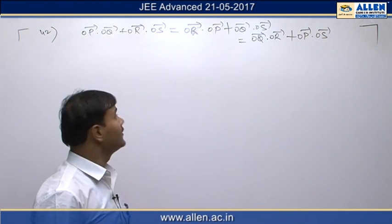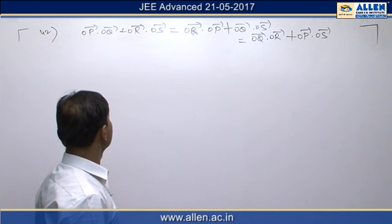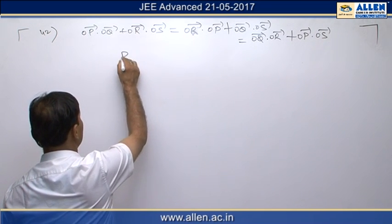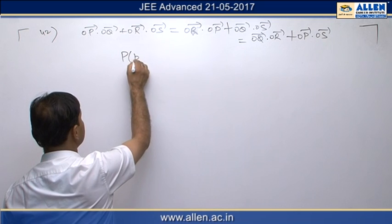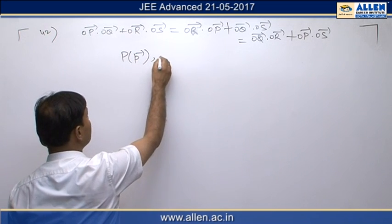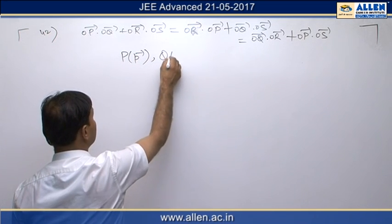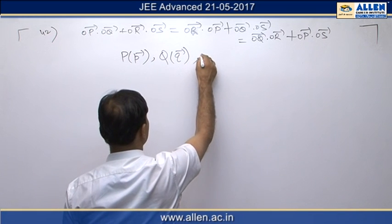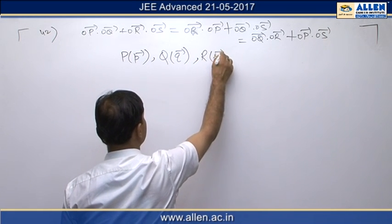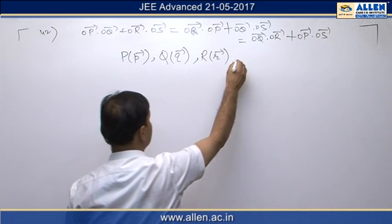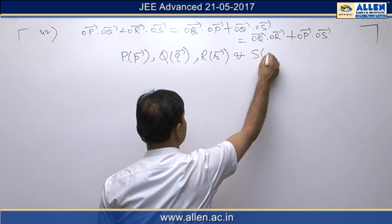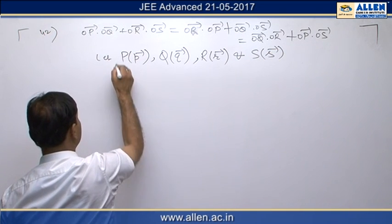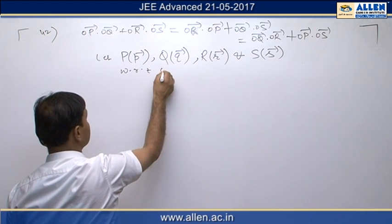Here O is the origin. Let us suppose that the position vectors of points P, Q, R, and S are denoted as P vector, Q vector, R vector, and S vector respectively, with respect to the origin.